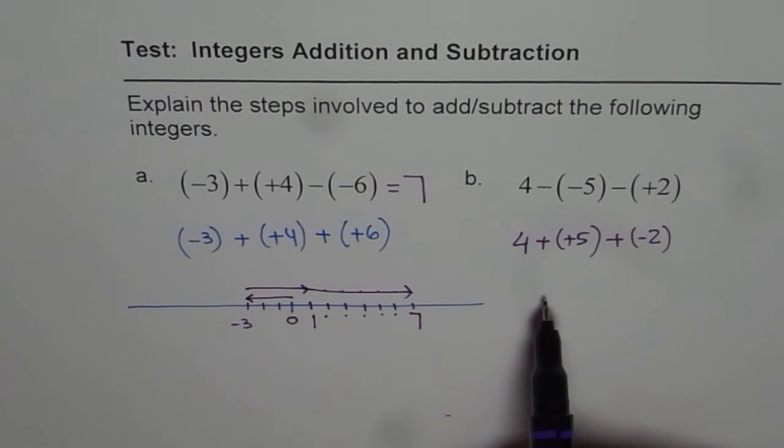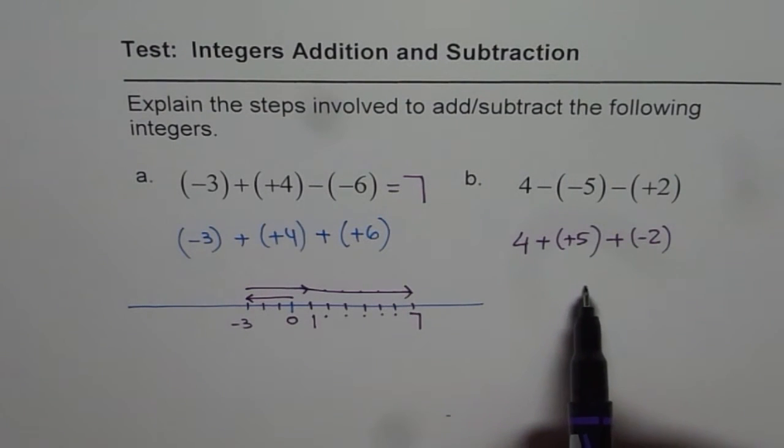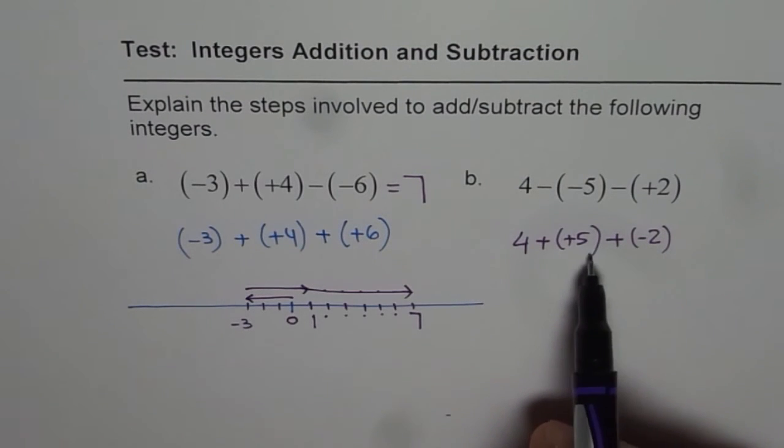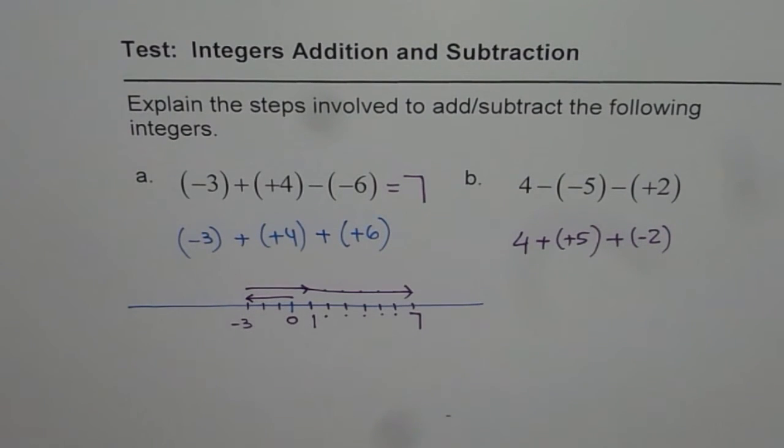Now, go to 0.4 and then from there, five away to the right and then two to left, you will get your answer, right? That is how we should add more than two integers using number line. I hope that helps. Thank you and all the best.